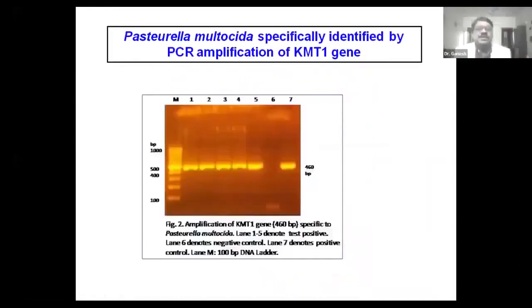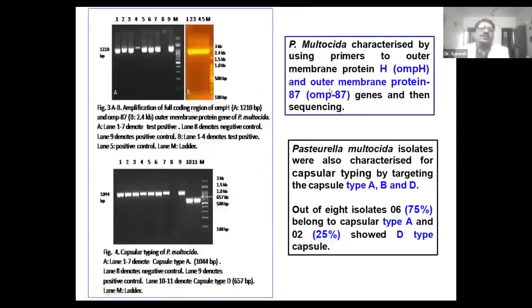We then performed PCR amplification using the KMT1 gene and confirmed Pasteurella multocida. We also conducted PCR for further characterization and typing of Pasteurella multocida using various genes, and found that out of eight isolates, six were of capsular type A and two were of capsular type B. The capsular type A Pasteurella multocida was further characterized using additional genes for further classification.